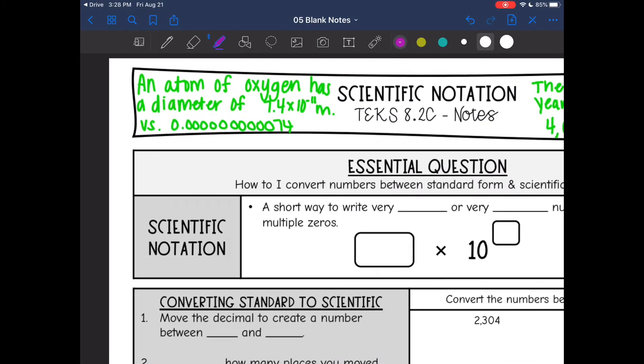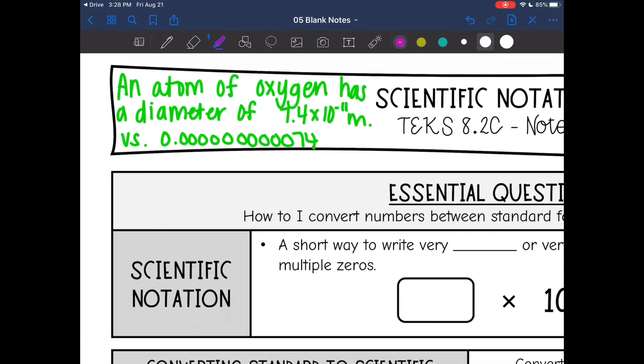So let's look at why it comes up in chemistry again. Scientific notation is this right here. This is how we're used to seeing numbers. This says an atom of oxygen has a diameter of 7.4 times 10 to the 11th m versus this really long number. So it's easier to read the number like this and analyze more about it versus trying to count how many place values this.